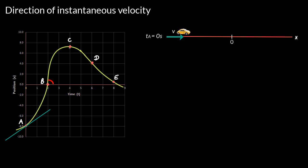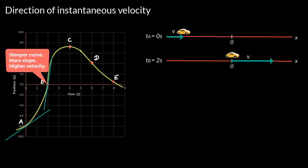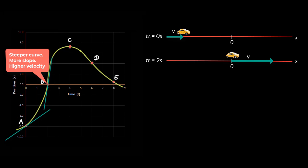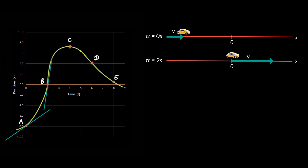At time t = 2 seconds, we draw a tangent to point B and see the slope is again positive, indicating velocity at t = 2 seconds is positive and the car is moving in positive x direction. The slope here is steeper, so instantaneous velocity must be higher compared to velocity at t = 0 seconds. At time t = 4 seconds, the tangent to the curve has a zero slope, which means the instantaneous velocity is also 0 and the car is not moving.